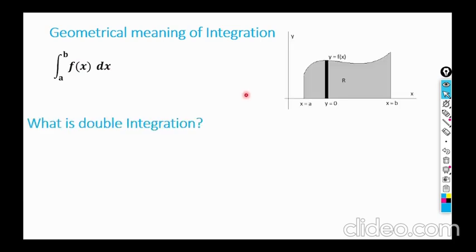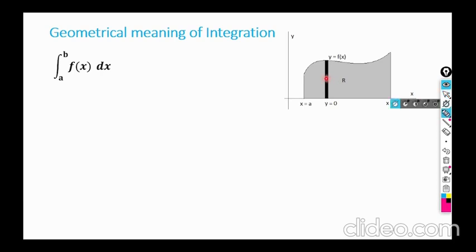It represents the area under the curve. You already learned why this integration represents area under the curve, but I'm giving the introduction again. We divide — this is the curve y = f(x) between the ordinates x = a and x = b, between these two lines and the x-axis.